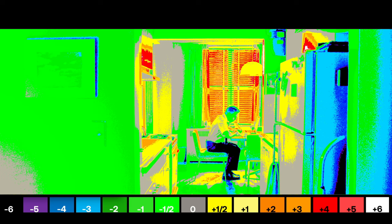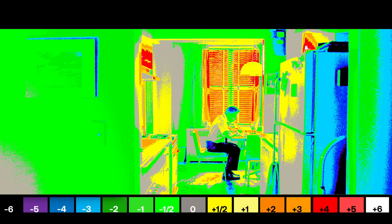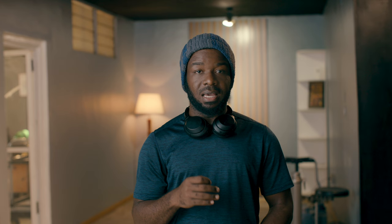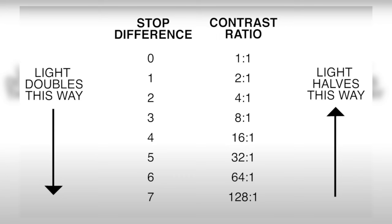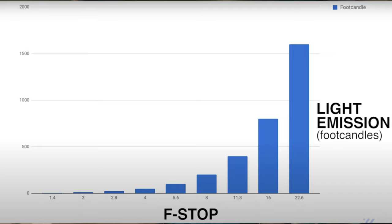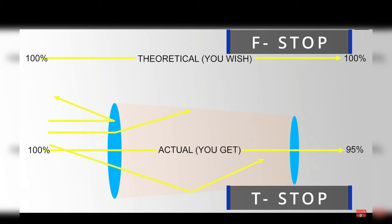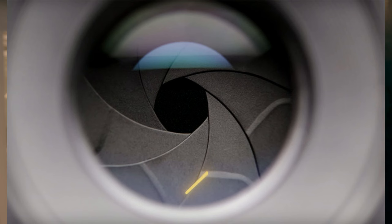We have all heard this term before, but what exactly does it mean and how can we apply it to filmmaking? The contrast ratio of an image is the luminance, or brightness difference, between the brightest part and the darkest part of your image. In cinematography we calculate contrast ratios in stops, whereas other mediums such as photography and the display industry use exponential ratios. For now let's stick to stops. While photography uses f-stop, cinema uses T-stop, as it speaks to the light transmission that happens through the lens.